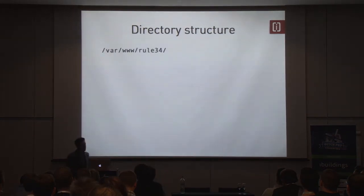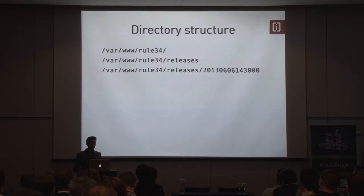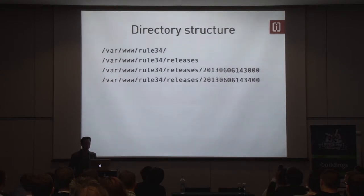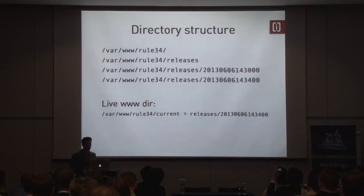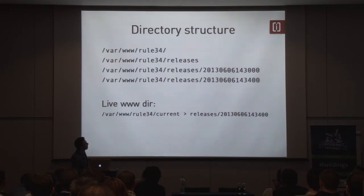A little thing about directory structure. This is a best practice applied in a lot of famous deployment tools. Let's say this is your root — you create a releases directory. Inside that you use a unique hash or timestamp for your version, so you know when that deploy happened. You also have a shared directory where you store data not specific to a version, like user data and logging. At the end of your deployment, after warming up your cache and running migrations, you create a symlink from 'current' to the new release, and that's when the switch happens.